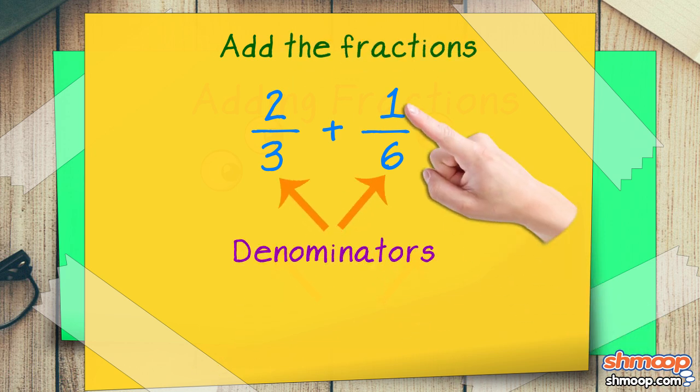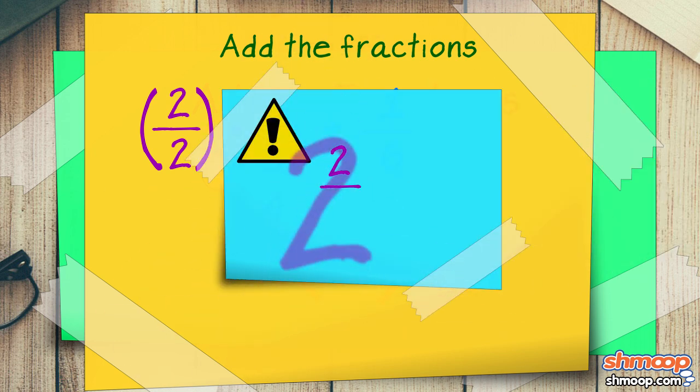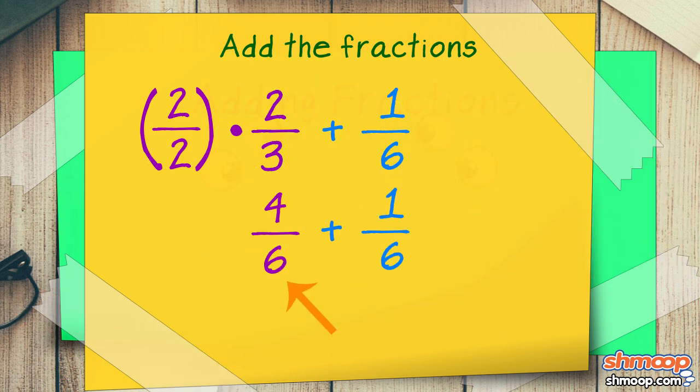We do this by multiplying the top and bottom of the fraction by the same number. In this case, we take two-halves times two-thirds to get four-sixths. Remember, two-halves, or two divided by two, equals one. So we're actually just multiplying by one. Now the denominators are the same, so we can add them. We get four-sixths plus one-sixth equals five-sixths.